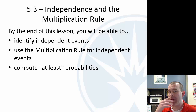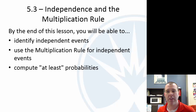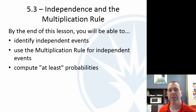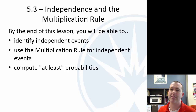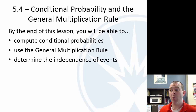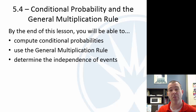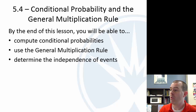We're going to combine sections 5-3 and 5-4. If I had my preference I would do these in a different order, but I'm going to do them together. 5-3 is about independence — we'll define what it means for two events to be independent, look at the multiplication rule, and discuss 'at least' probabilities in the online lesson. 5-4 is about conditional probabilities, and I like to do that first because it helps with the idea of independence. So we'll cover conditional probabilities, the general multiplication rule, and then independence.